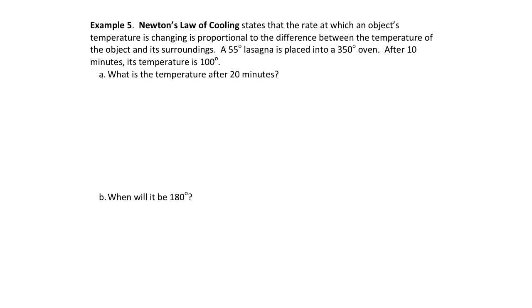We take a 55-degree lasagna and place it into a 350-degree oven. After 10 minutes the temperature is 100 degrees. We want to know the temperature after 20 minutes. Let capital T be the lasagna temperature. Since the rate is proportional to the difference between the object's temperature and surroundings, we let Y equal T minus 350 — the difference between the object's temperature and the oven temperature.